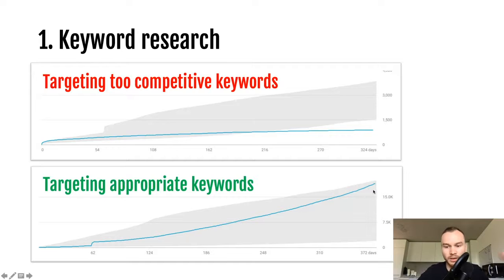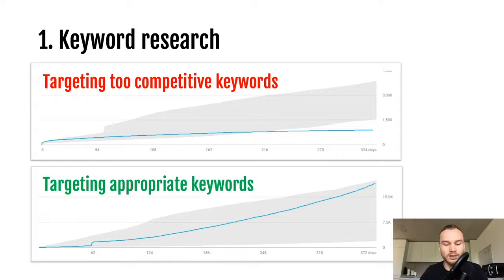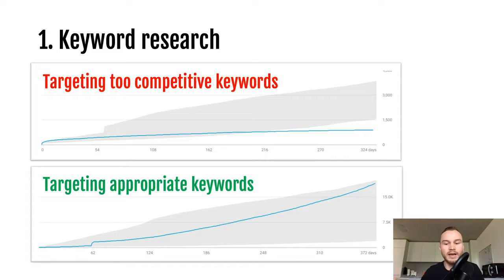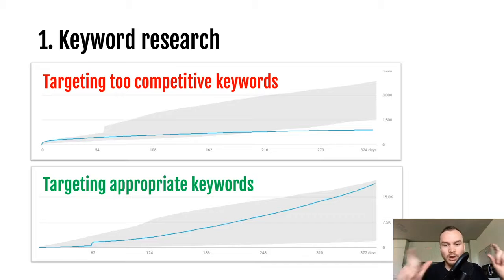In the bottom example, I did my keyword research correctly and targeted lower competition keywords I could actually rank for. The views keep growing over time as the video gets ranked. After a little over a year, I almost have 20,000 views for that specific video. You have to be realistic — you're not going to rank for high competition keywords when you're just starting out on YouTube.